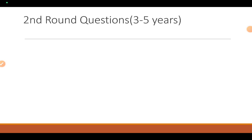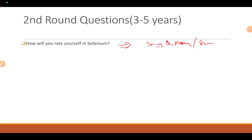If you have cleared the first round, the second round will be taken by a senior person — your manager, the QA team manager, or a senior lead. They may ask you to rate yourself in Selenium out of 5 or 10, so you should explain your abilities.